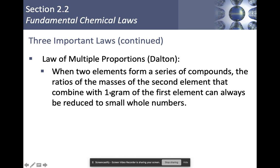Last fundamental chemical law, The Law of Multiple Proportions by John Dalton. It says when two elements form a series of compounds, the ratios of the masses of the second element that combine with one gram of the first element can always be reduced to small whole numbers. So you can't have a fraction of an element in a chemical formula. It's always going to be whole numbers.